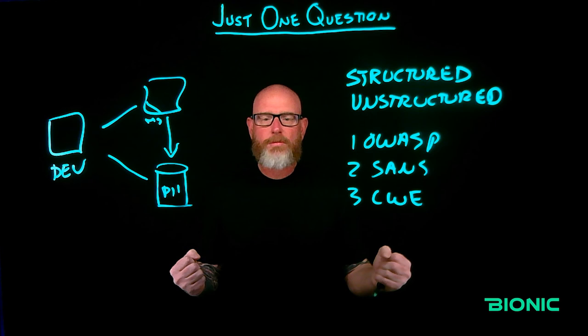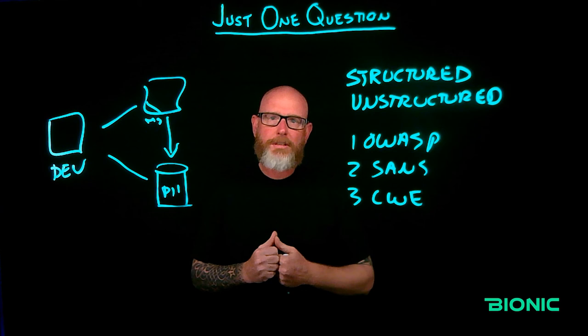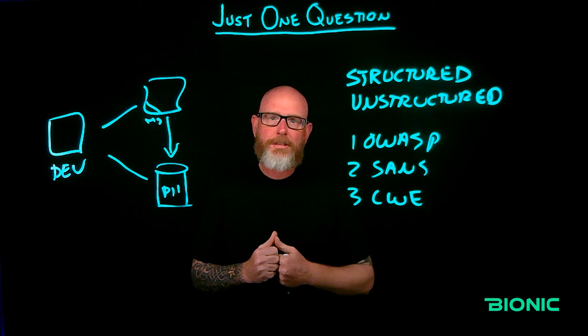So when you're thinking about risk, don't think about just structured risk. Think about the unstructured risk within your applications, because that's kind of the holy grail for a hacker — finding something unique that gives away valuable data. I'm Matt Rose. This is Bionic Uncensored, and when you think about one question, it's a lot bigger than that. Thanks for watching.